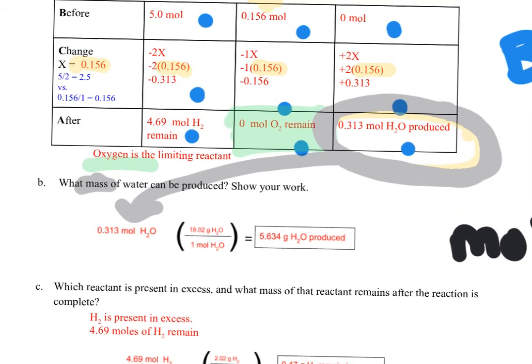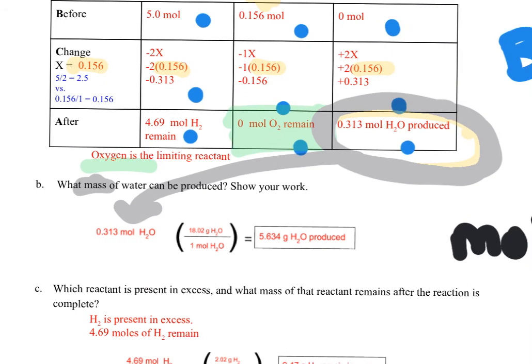What is the molar mass of H2O? Well, two H's plus one O gives me the molar mass of H2O, 18.02. So I'm going to take 0.313 times 18.02.